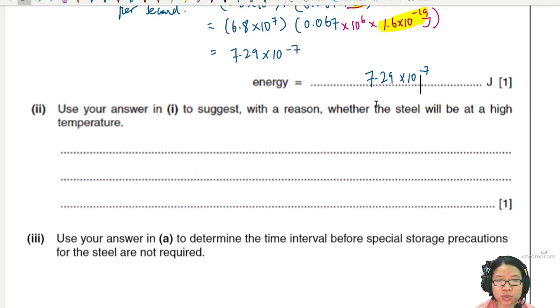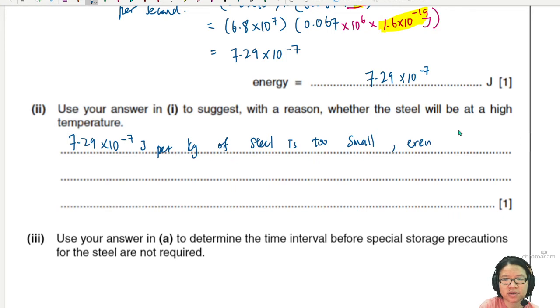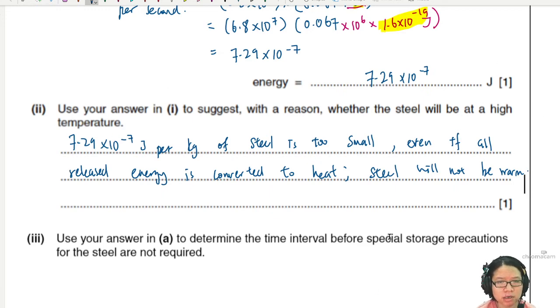So using your answer, suggest with a reason whether the steel will be at high temperature or not. So you can say 7.29 times 10 to the power of negative 7 Joule per kg of steel is too small. Even if all release energy is converted to heat, steel will not be warm. The idea is you mention that this is a very little amount of energy. It's too small. Quantity of energy. Too little energy.